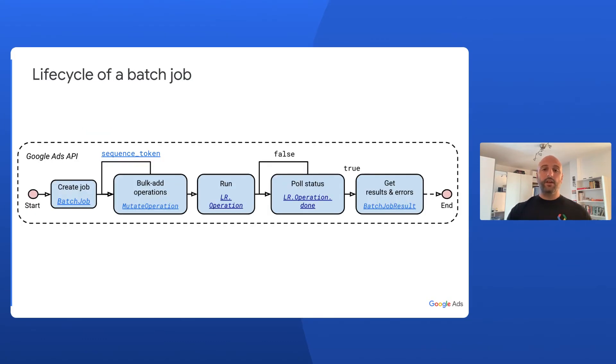This means that you first create your job, then you add the list of new data operations that you want your job to perform, and then you run the job, which will not complete immediately. Instead, you can poll the status of the job, and only once it is complete you can retrieve its results and errors, if any. The Google Ads API also requires you to be explicit in identifying the fields that you want to mutate when updating an entity. This is done through the usage of field masks.